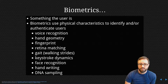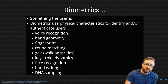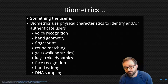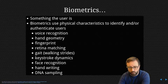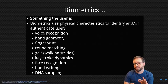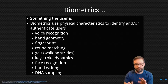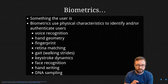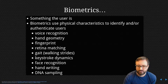Some examples of biometrics would be voice recognition, hand geometry, fingerprints, retina matching, gait — that's the strides and how you walk — keystroke dynamics, which is the patterns you use when typing such as pausing between certain letters or taking longer on double letters, face recognition, handwriting, and DNA sampling.